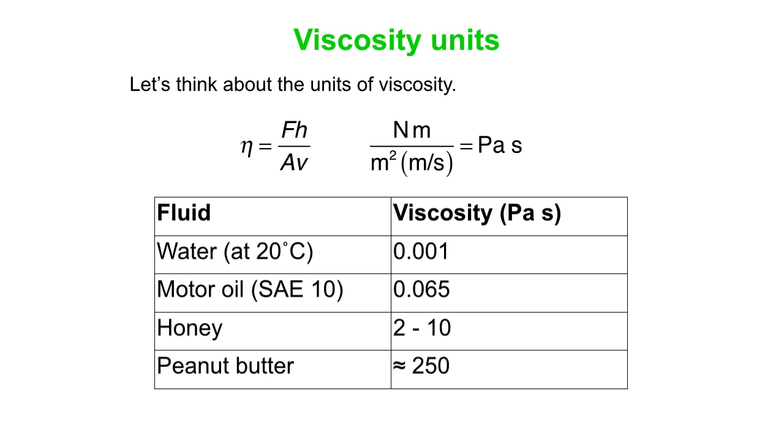That's between 2,000 and 10,000 times as viscous as water is at 20 degrees C. And then you get peanut butter, which does not flow very easily at all. Very sticky. So that in fact is just our very brief introduction to viscosity. And that's all for today.